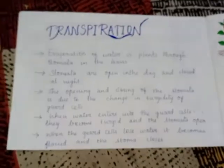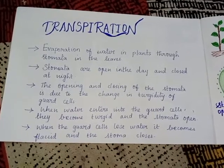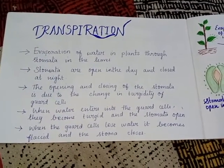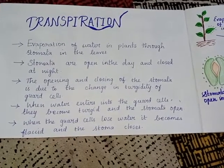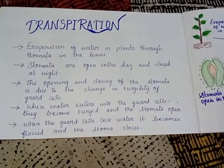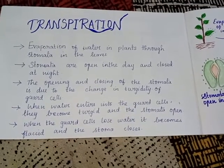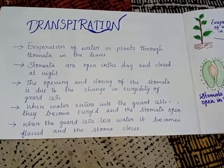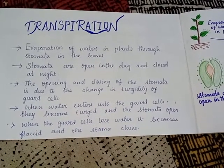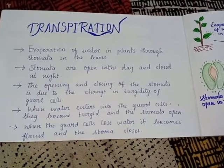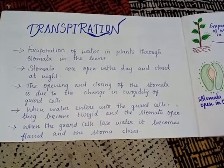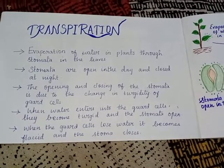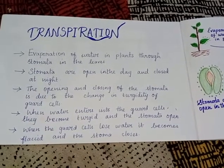What is meant by transpiration? Evaporation of water in plants through stomata in the leaf. Stomata are open in the day and closed at night. The opening and closing of stomata is due to the change in turgidity of guard cells. When water enters into guard cells, they become turgid and stomata open. When guard cells lose water, they become flaccid and stomata close.